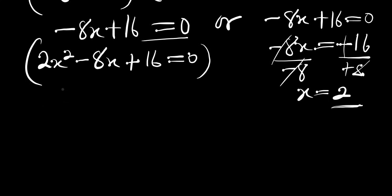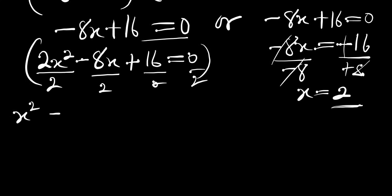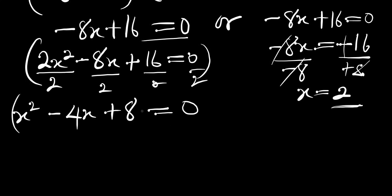From 2x squared minus 8x plus 16 equals zero, we divide each term by 2, giving us x squared minus 4x plus 8 equals zero. We are now working with this simplified quadratic.